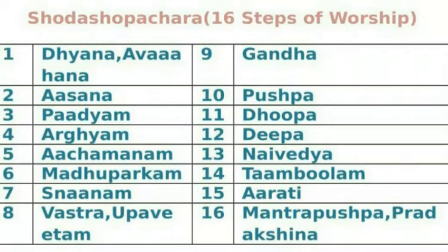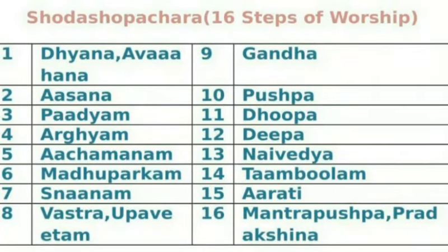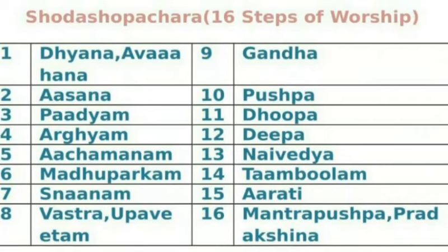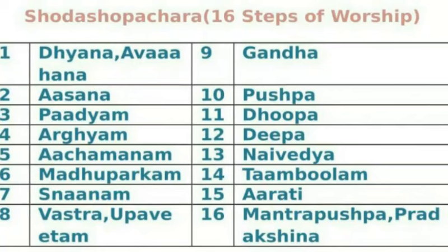In Hindu mythology there is a law called Agama Shastra. According to the Agama Shastra, the rituals and worship offered to the God will be conducted. I will present the Agama Shastra according to which there will be 16 steps we have to follow to worship God. They are called Shodachopachara, which means 16 steps.